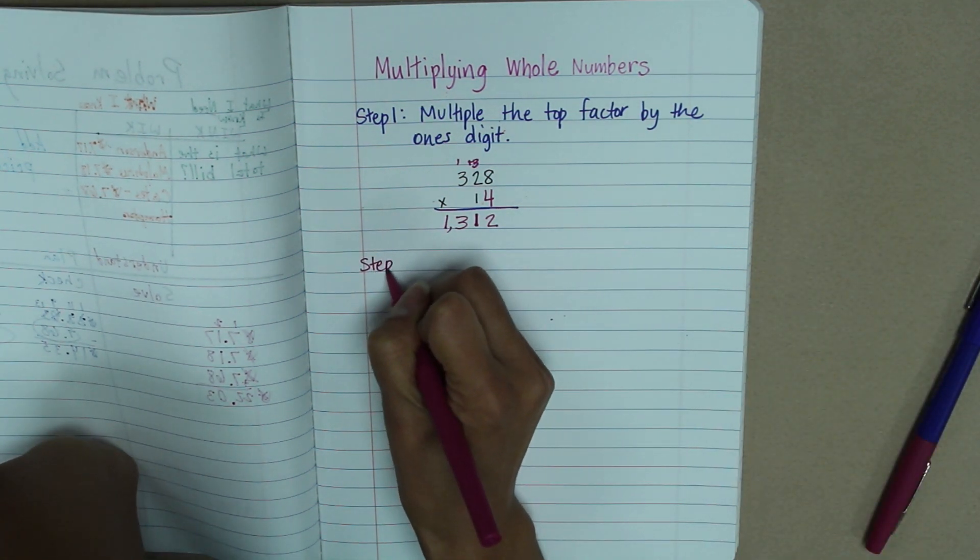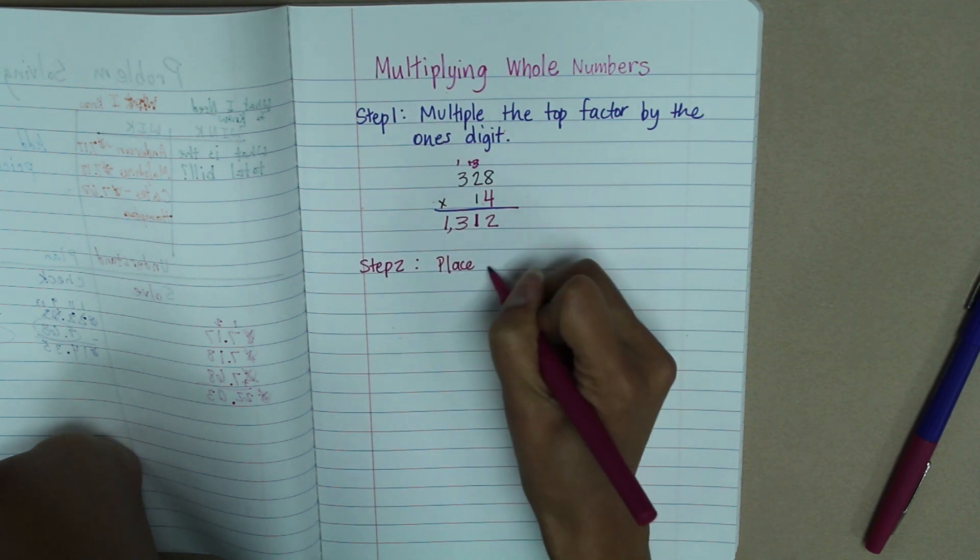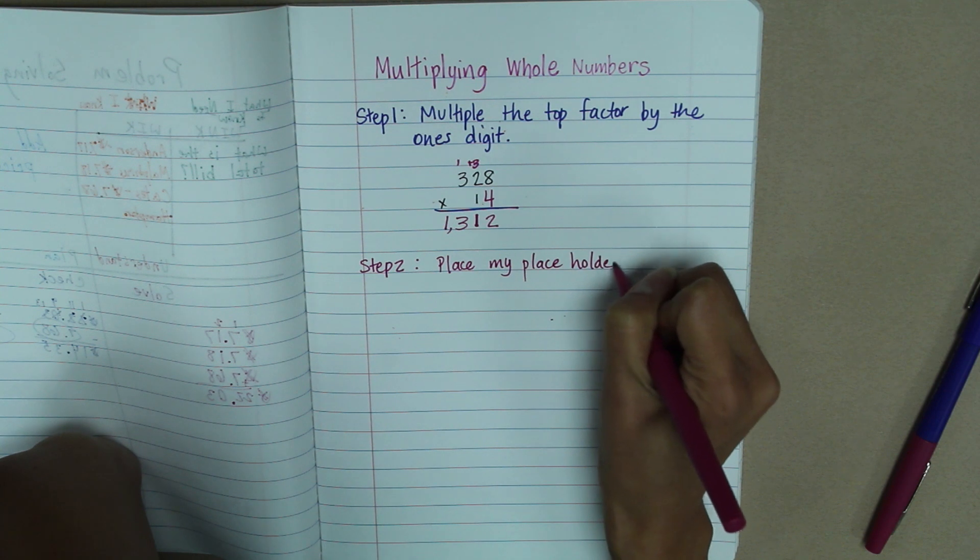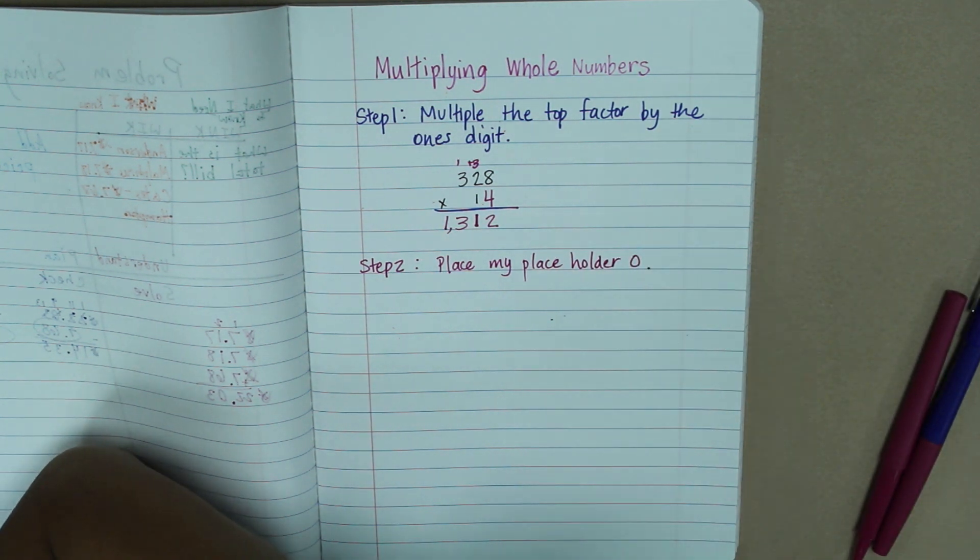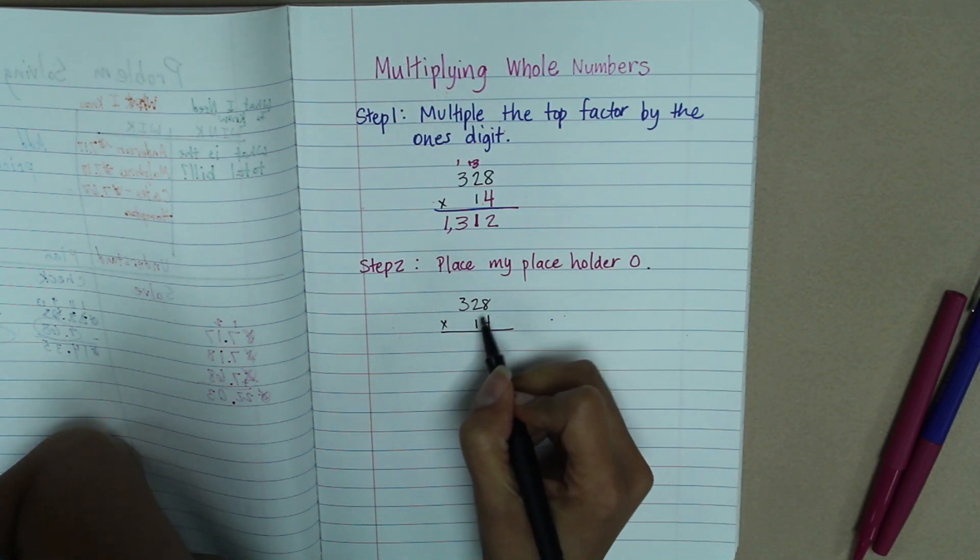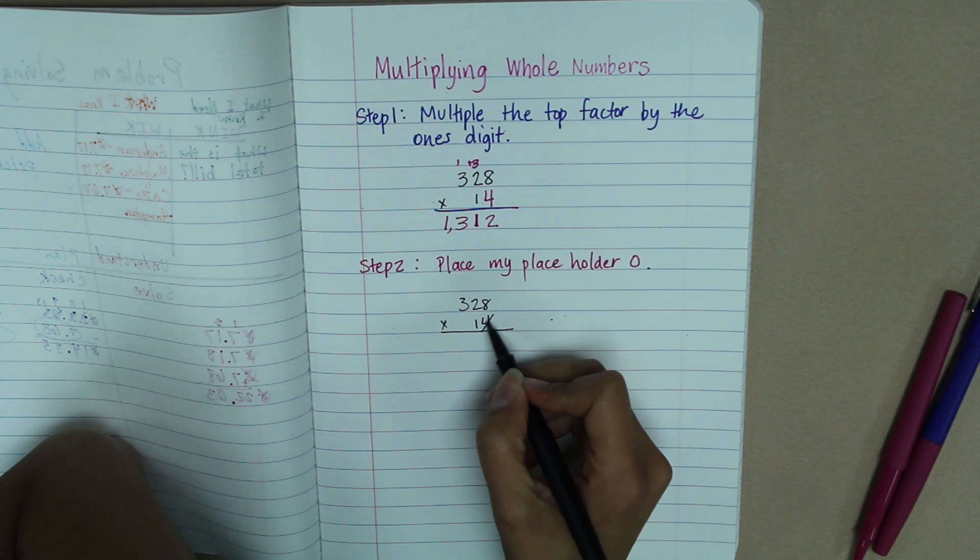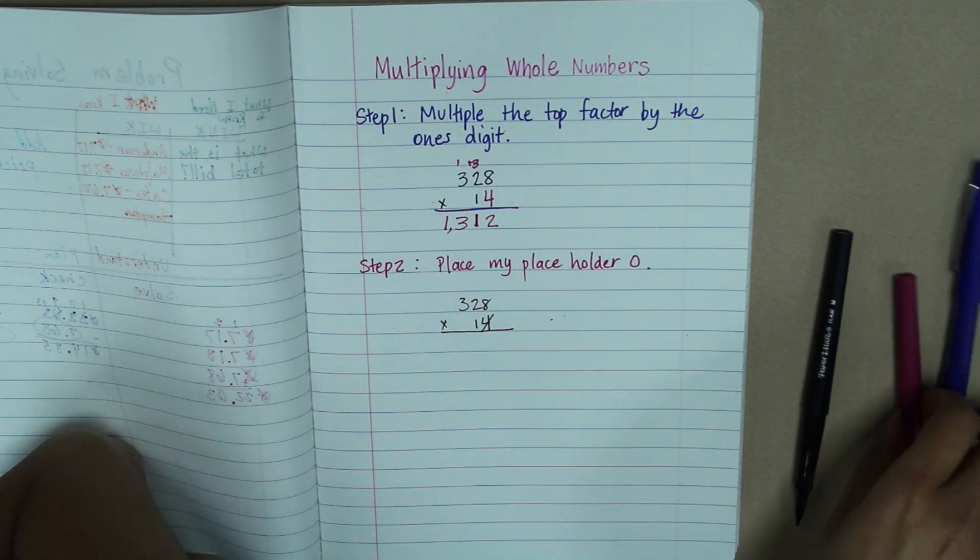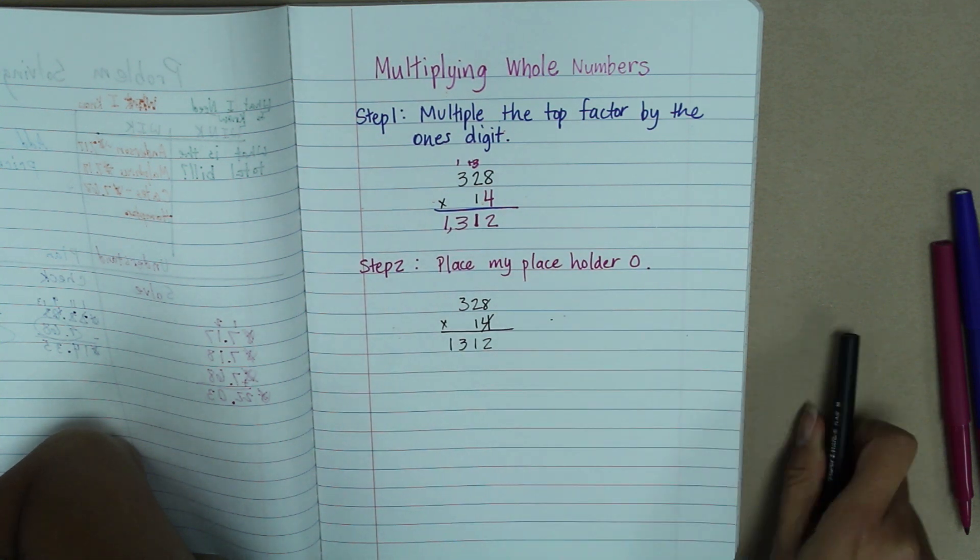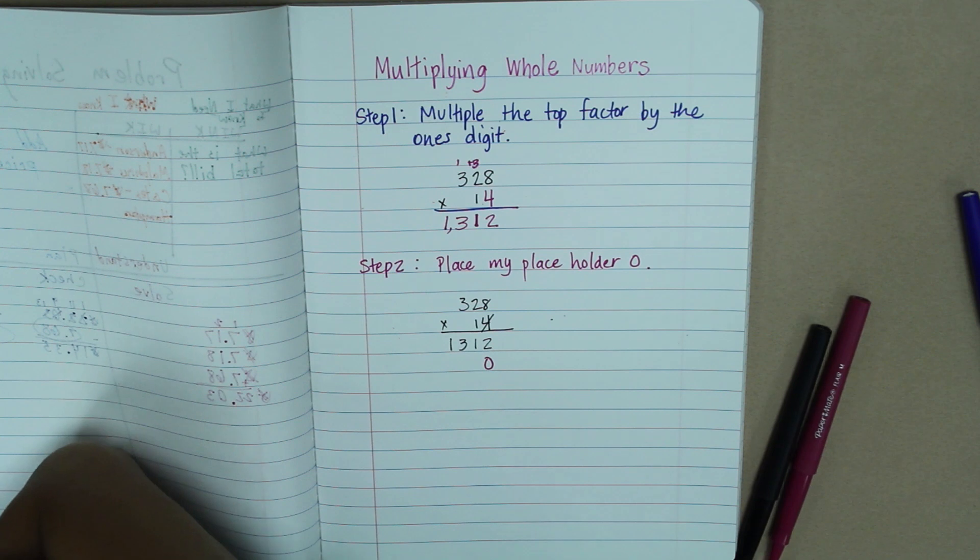My second step, step 2, tells me to place my 0 placeholder. What does that look like? Again, 328 times 14. So I have now finished using my 4 in the one's place, so I'm just going to draw a line through that to remind me that I don't need to multiply by the one's place any longer. So let's rewrite this here. And I put my 0 in place because I'm no longer multiplying by that 1. Let's move on to our next step.